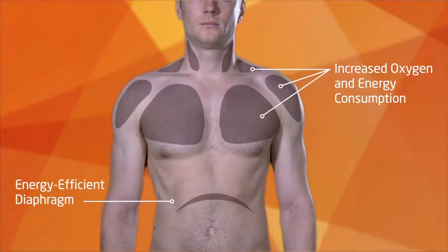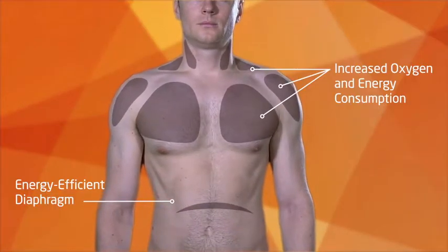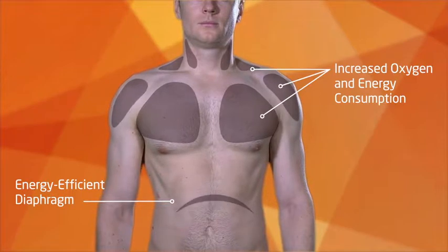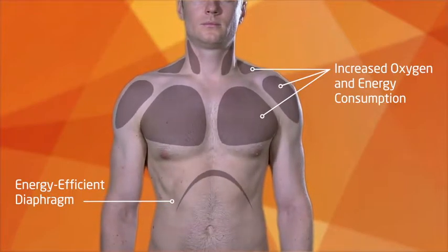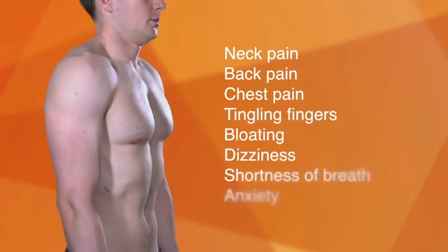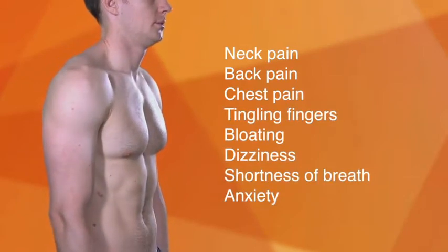Using these muscles takes more effort and consequently more oxygen than breathing efficiently. The accessory muscles encourage breathing into the upper part of the chest, leading to muscle tension, which may cause neck and back pain and other systemic symptoms.